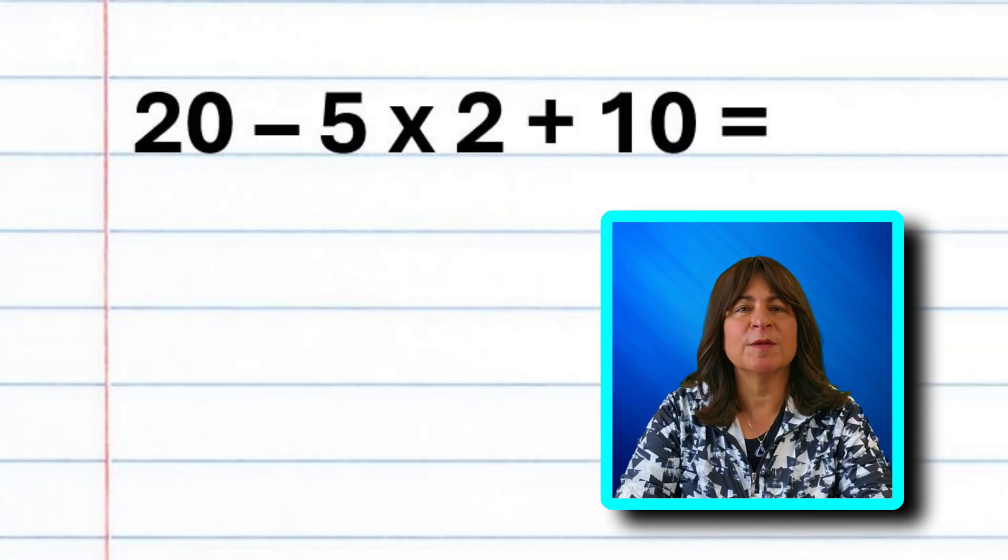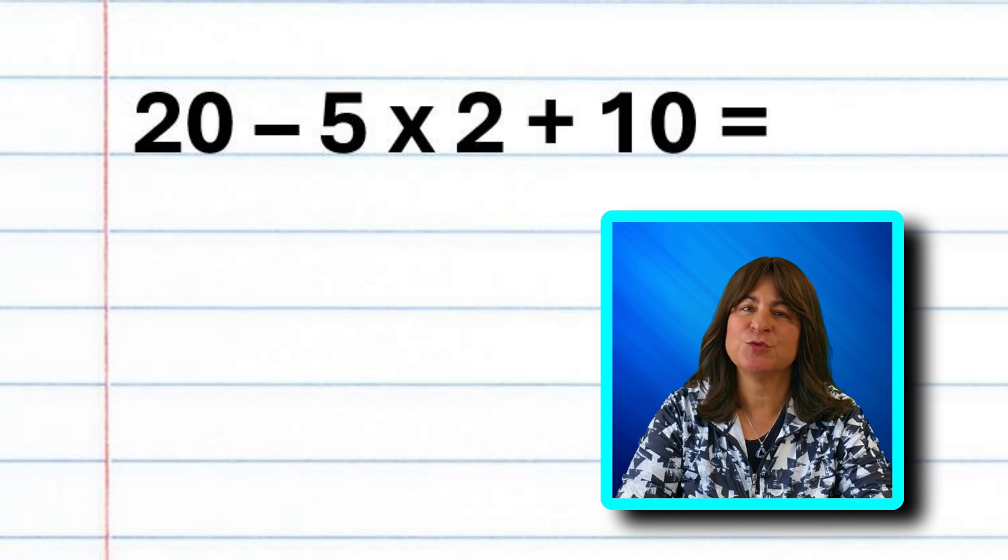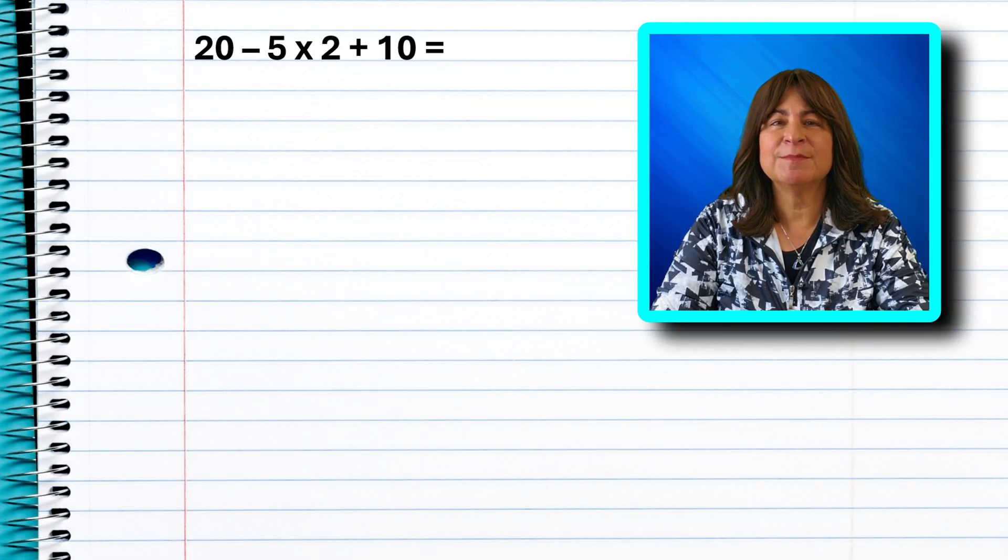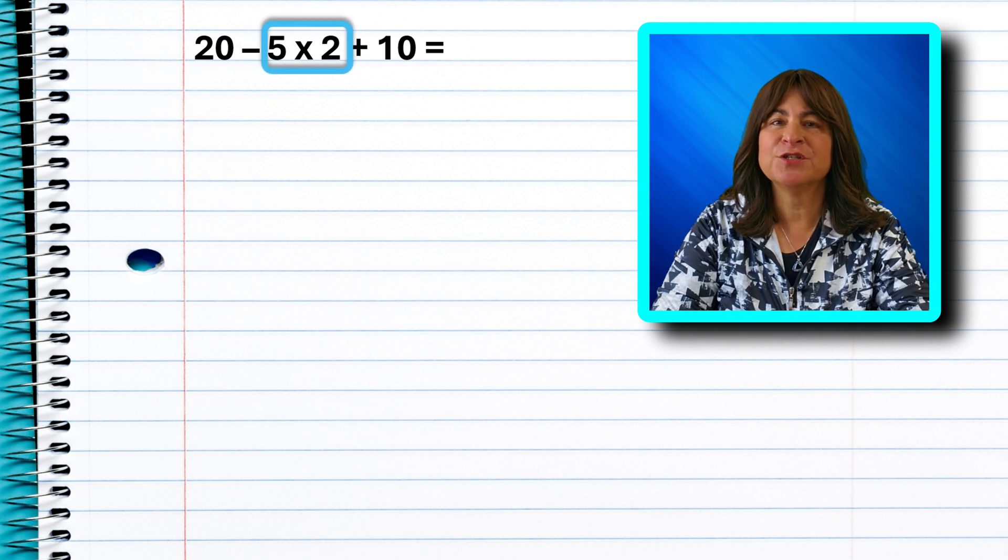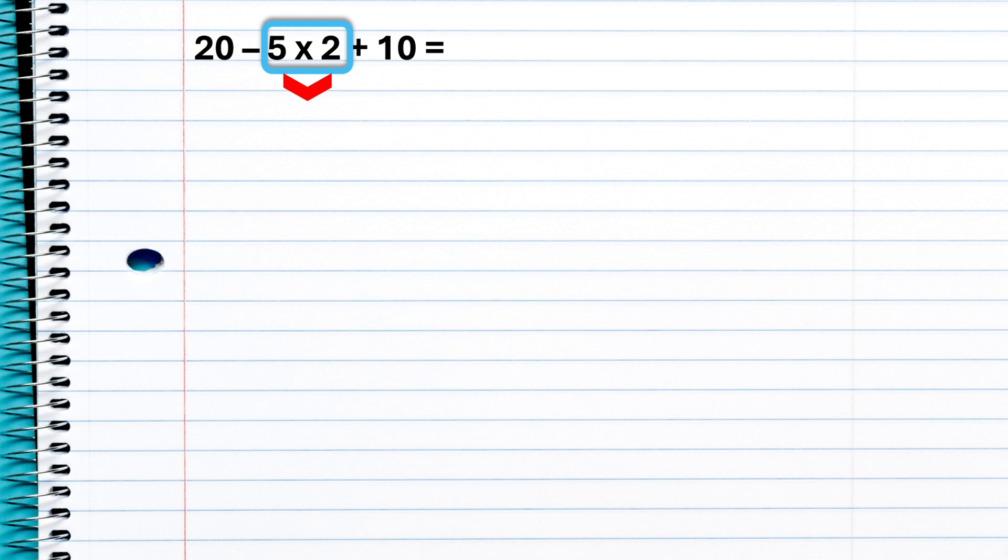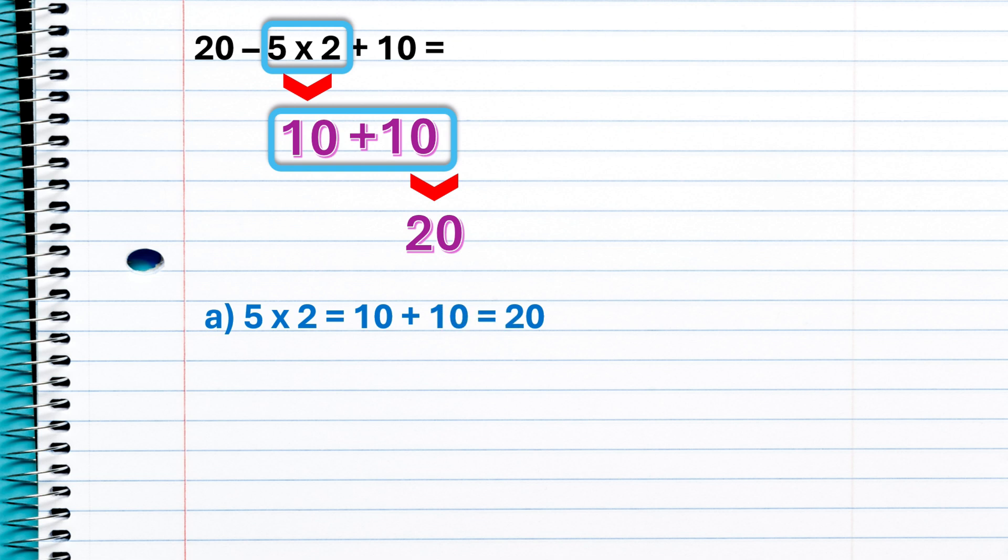How about this problem? 20 minus 5 times 2 plus 10. Is this one easier with addition and subtraction? Is this 5 times 2 because we all know multiplication comes first? Or do we? More about that in a minute. Is it 5 times 2, which is 10, plus 10, which is 20, and then 20 minus 20, which is 0? Is the answer 0?